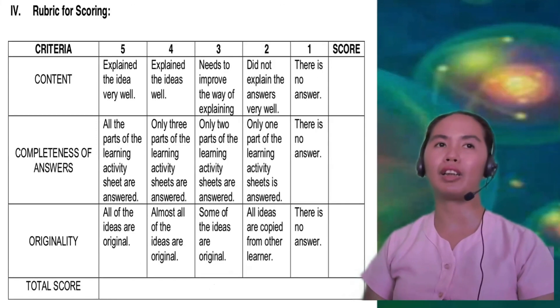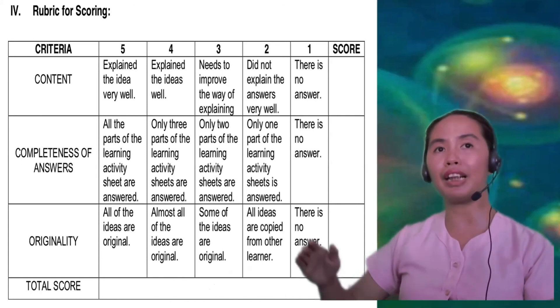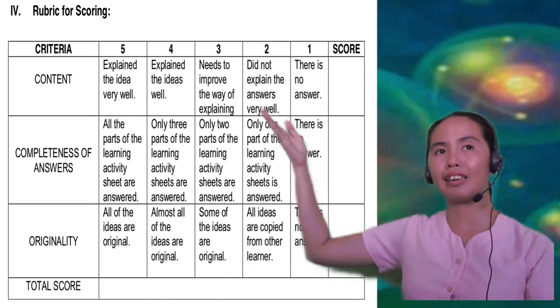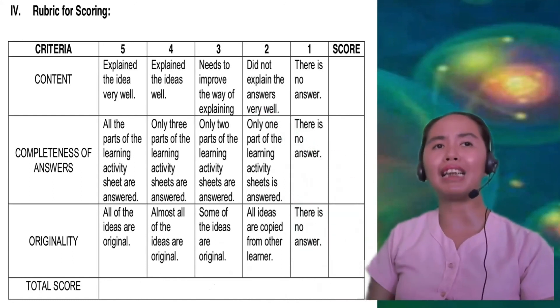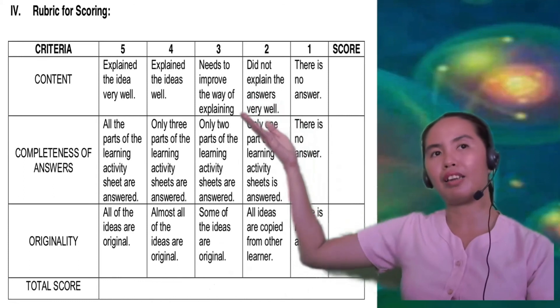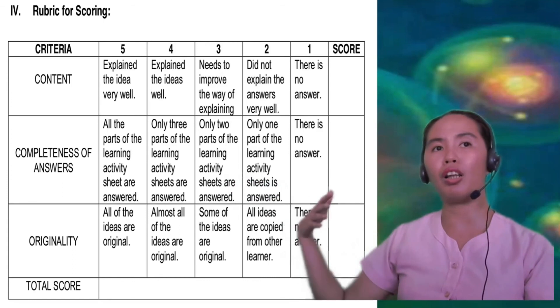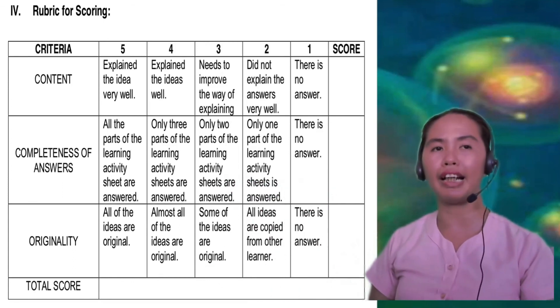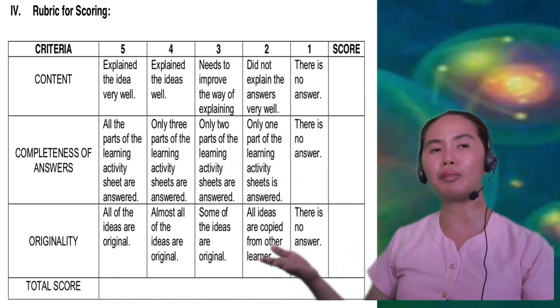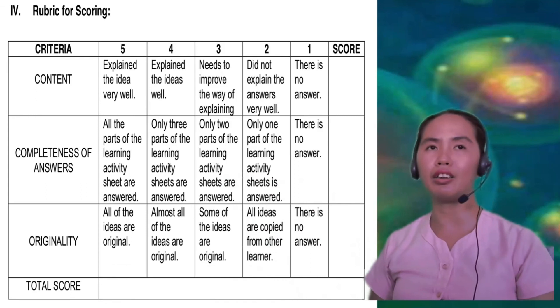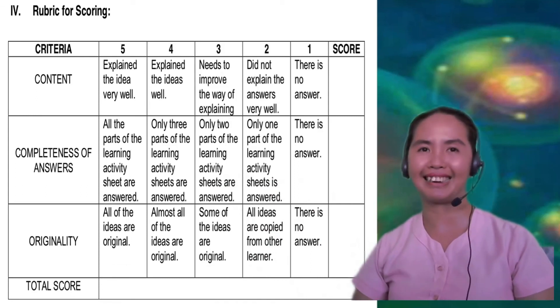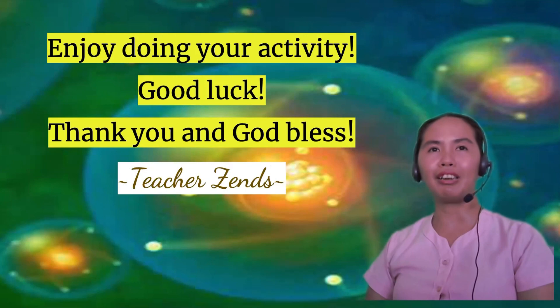Here's the rubric for scoring to guide you in doing your activity. The first criteria, we have the content. To get 5 points, you must be able to explain the idea very well. Second, we have completeness of answers, 5 points if all the parts of the learning activity sheet are answered. And last but not the least, we have originality, which is 5 points also. All of the ideas are original. A total of 15 points. Enjoy doing your activity. Good luck. Thank you and God bless.